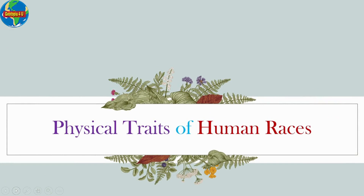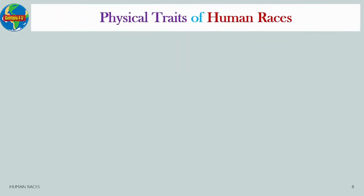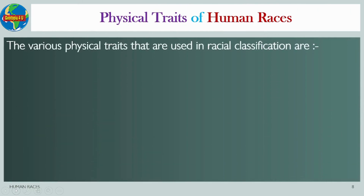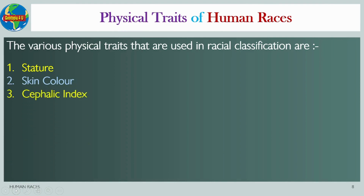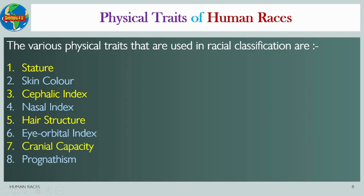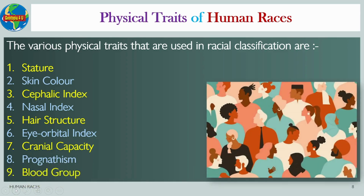The various physical traits that are used in racial classification are: number one, stature; number two, skin color; number three, cephalic index; number four, nasal index; number five, hair structure; number six, eye orbital index; number seven, cranial capacity; number eight, prognathism; and number nine, blood group. We will have a look at each of them in detail.